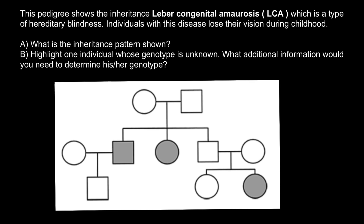Hello and welcome to Nikolai's genetics lessons. Today's problem is: this pedigree shows the inheritance of Leber Congenital Amaurosis, LCA, which is a type of hereditary blindness. Individuals with this disease lose their vision during childhood. And we have two questions today.